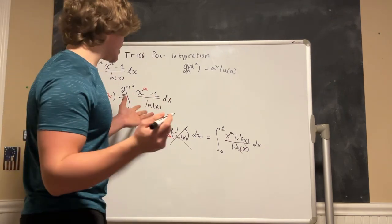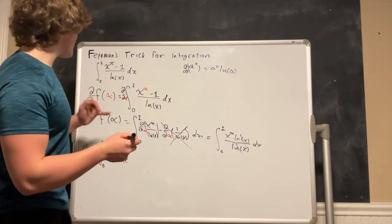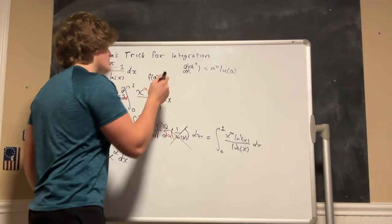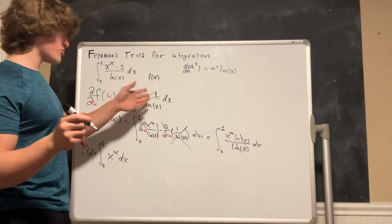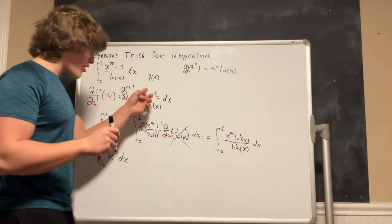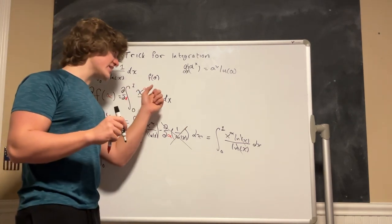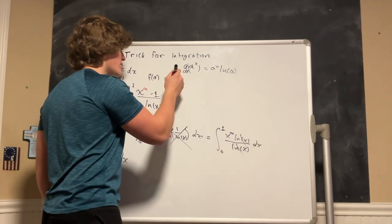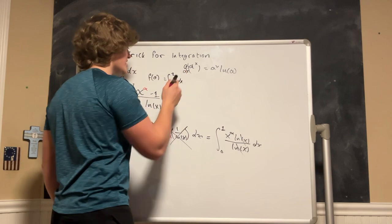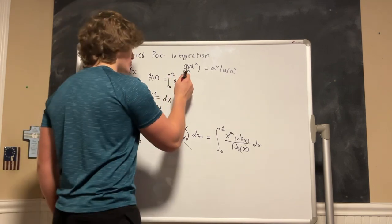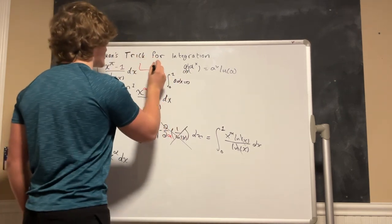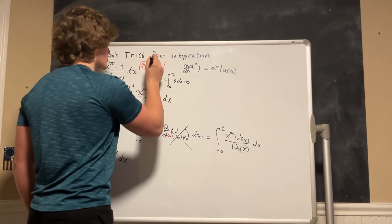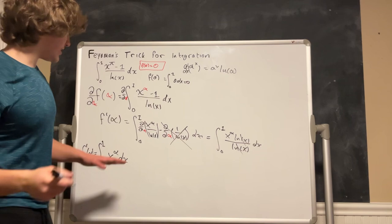Now I'm going to do something real quick that I should have done at the beginning however I kind of forgot. So let's define f of 0. So f of 0 is equal to the integral of x to the 0 minus 1 however this just becomes 1 minus 1. So this means that f of 0 is equal to the integral from 0 to 1 of 0 with respect to x which is just going to be 0. So we have this piece of information that f of 0 equals 0 and we will need that in a few steps.